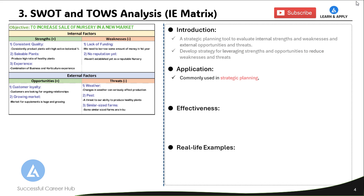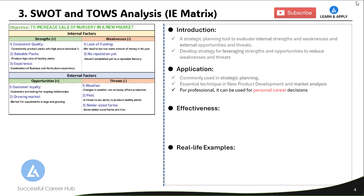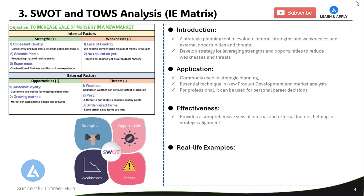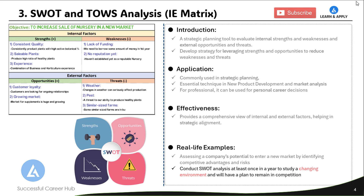As a part of its application, SWOT and TOES analysis is commonly used in strategic planning, new product development, and market analysis. For professionals, it can also be used for personal career decisions. This tool is effective because it provides a comprehensive view of internal and external factors, helping in strategic alignment. A practical example includes assessing a company's potential to enter a new market by identifying competitive advantages and risks. This exercise should be conducted at least once a year to study the changing environment and plan to remain competitive.